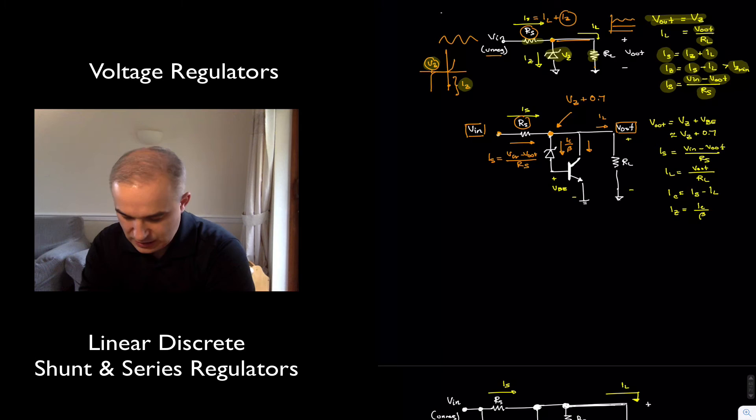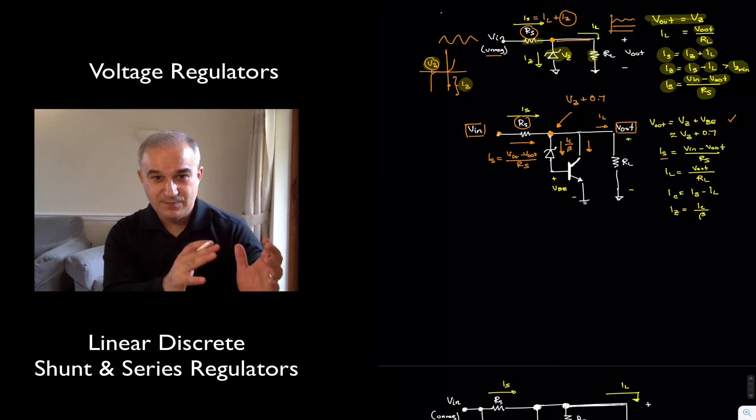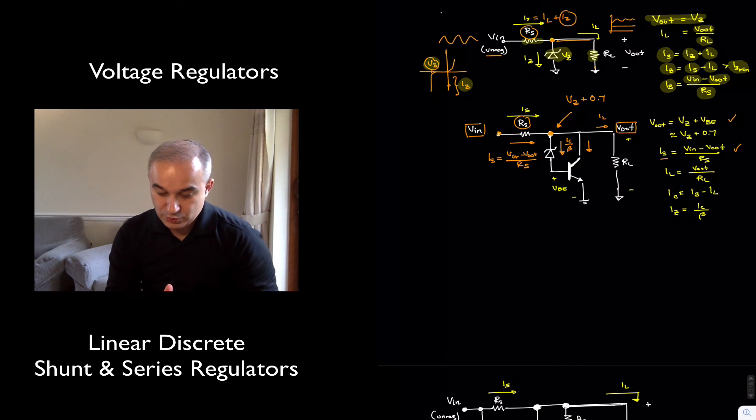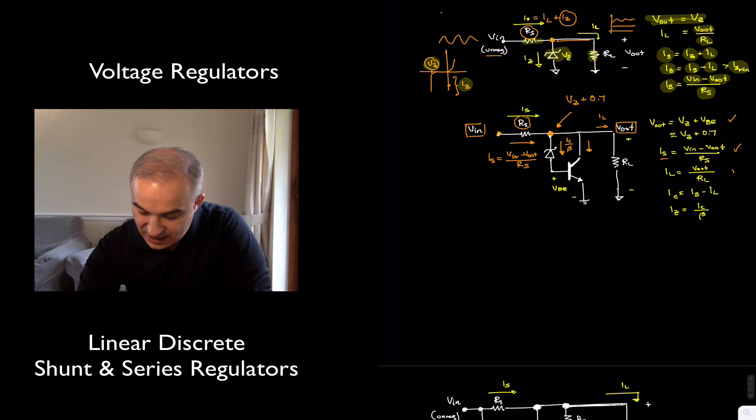Okay? So that's what we have here. The output is the ZENER voltage plus 0.7. The IS is the same as before, V-input minus V-output over RS. The load current is V-output over RL.